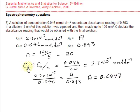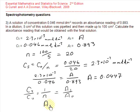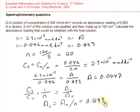However, we could have used a shortcut here, because we know that the ratio of the two concentrations, Cs over C₀, equals 1 over the dilution ratio. And since Cs over C₀ also equals As over A₀, the ratio of absorbances is in the same ratio as the concentrations. So the final absorbance equals 0.893 divided by 20, which gives the same answer of 0.0447.